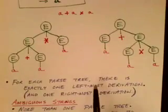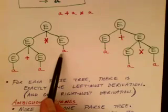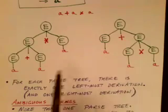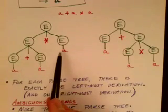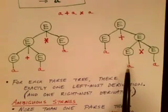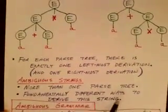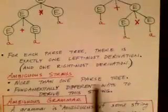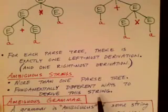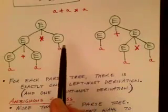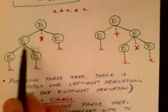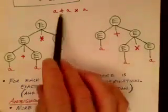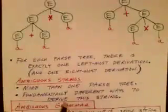For every parse tree there's exactly one leftmost derivation. So there's a leftmost derivation for this string using this parse tree, and a different leftmost derivation for the other parse tree. Likewise, there's also a rightmost derivation corresponding to each parse tree. An ambiguous string is a string such as this one that has more than one parse tree — there are fundamentally different ways to derive this string in the grammar.